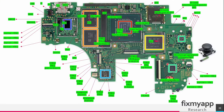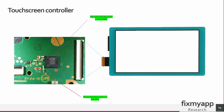The touch controller is located in this region. This is the touch controller FPC connector, this is the touch screen controller. It's connected to this FPC connector and this is the LCD screen. This ribbon cable connects into this FPC connector and all data lines will go to this controller IC.